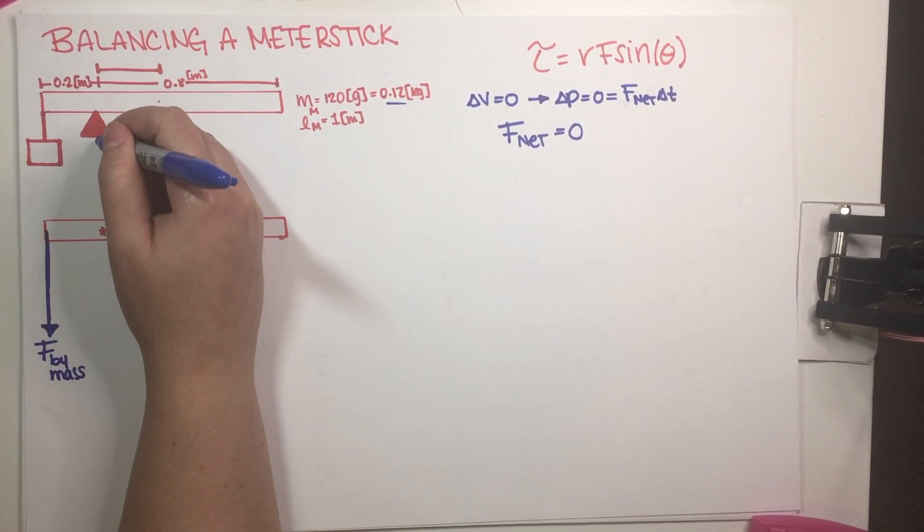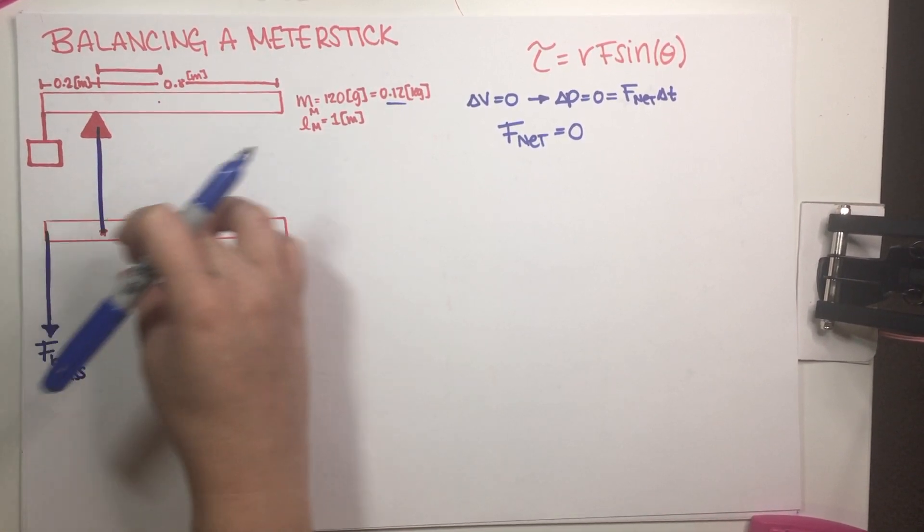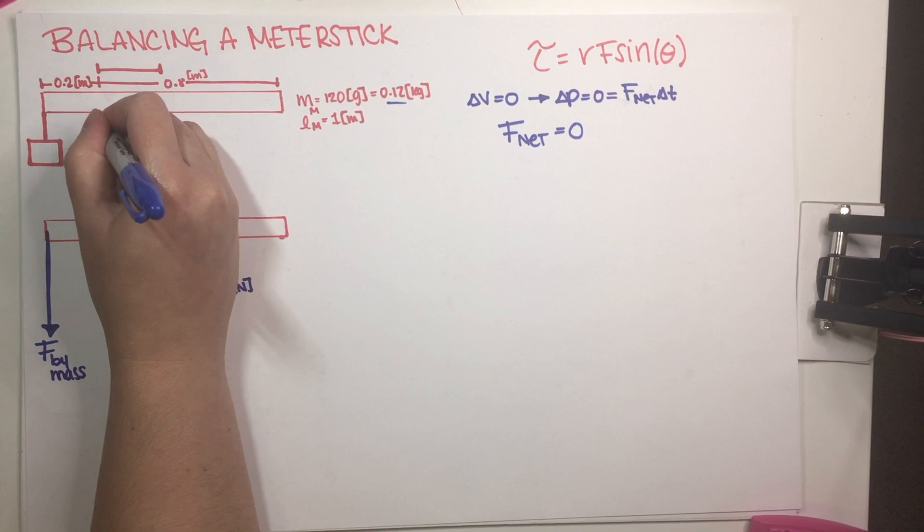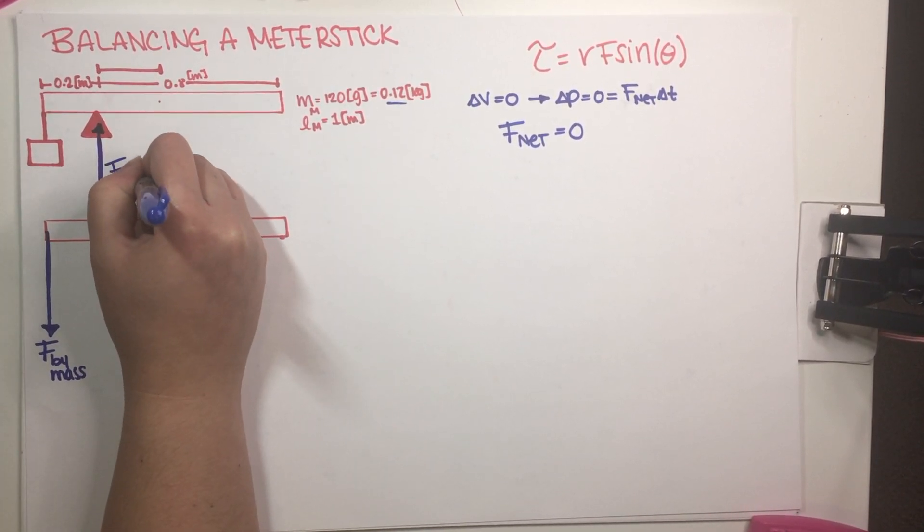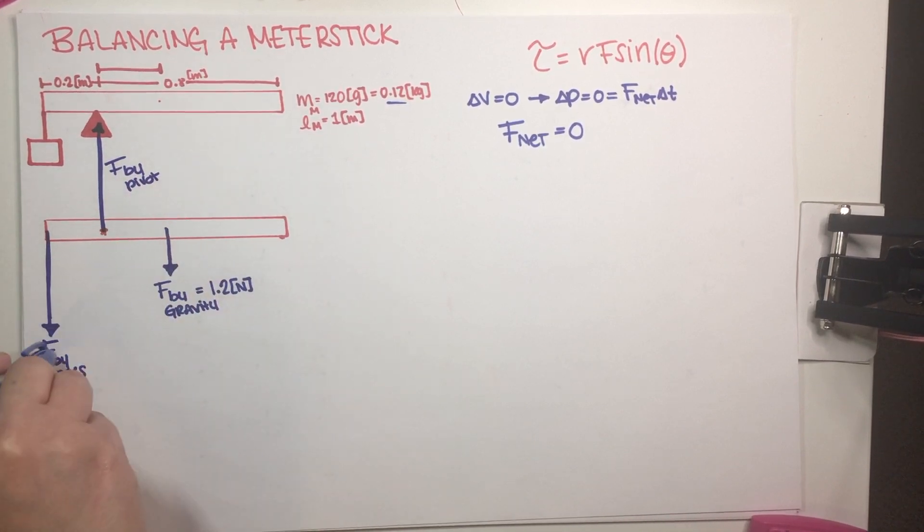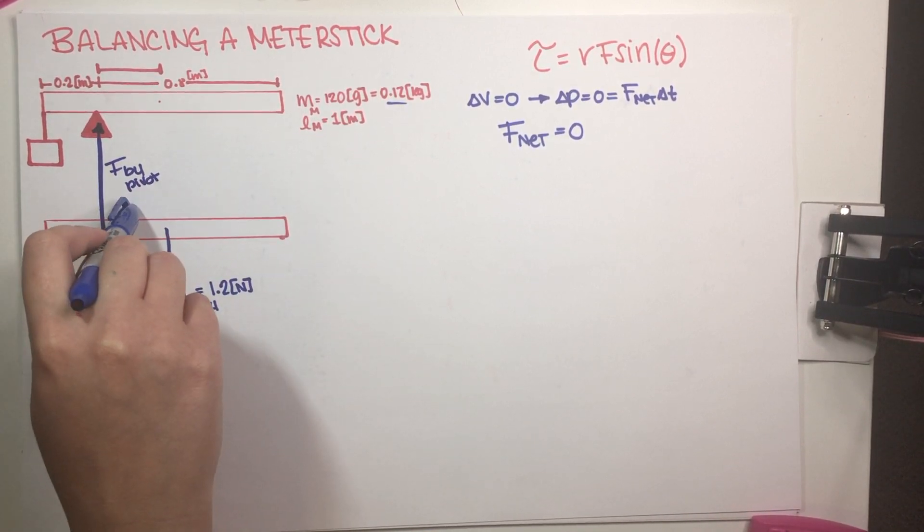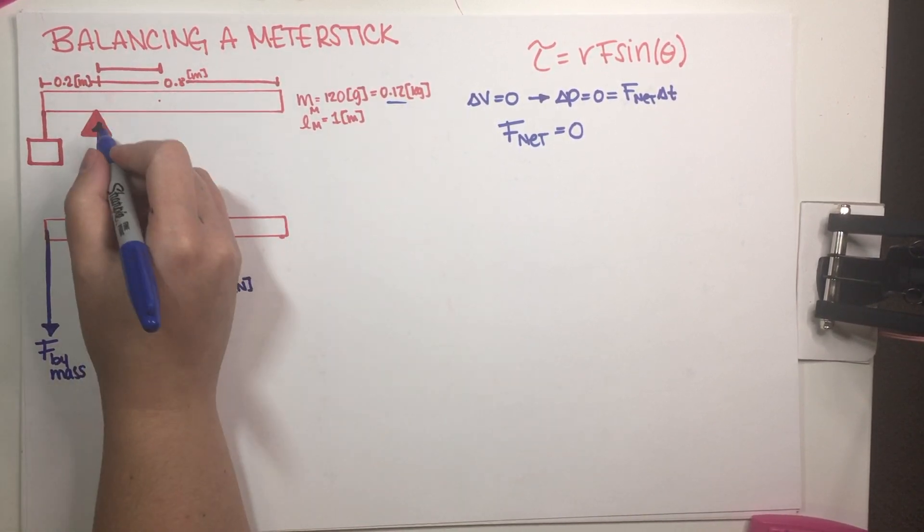So the third force is going to be force by pivot on the meter stick, and it has to be big enough that it can counteract these two. So I'm just going to write that down. Obviously, if I don't have this magnitude, then I can't figure out this magnitude, but we will eventually. It is part B of this problem.